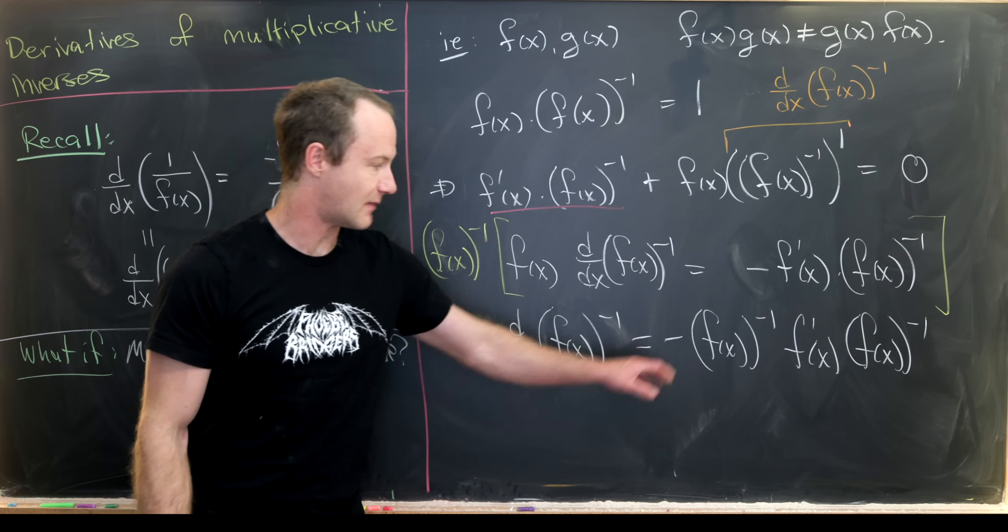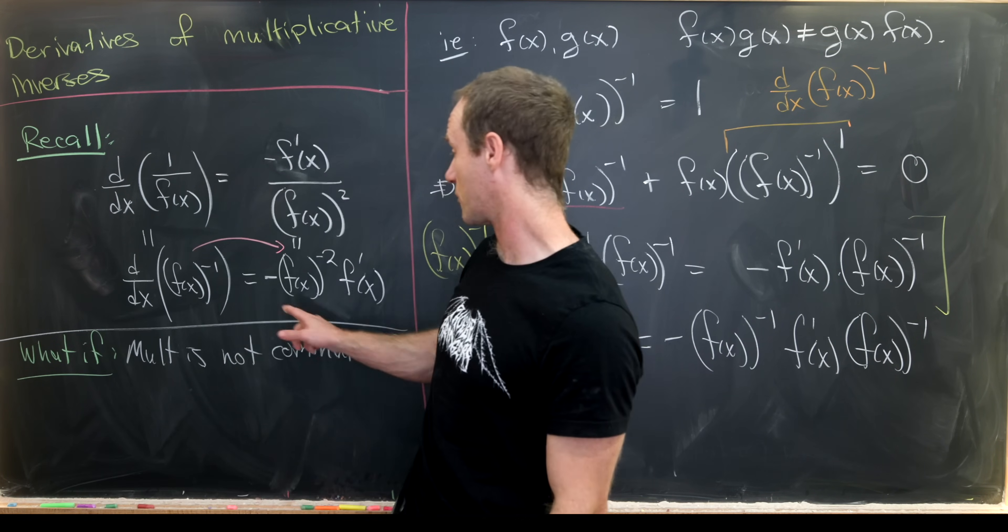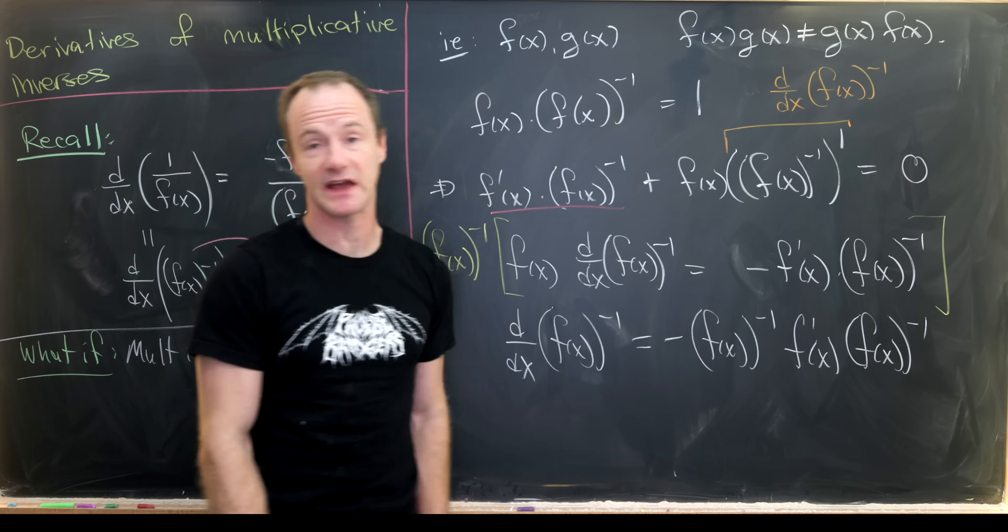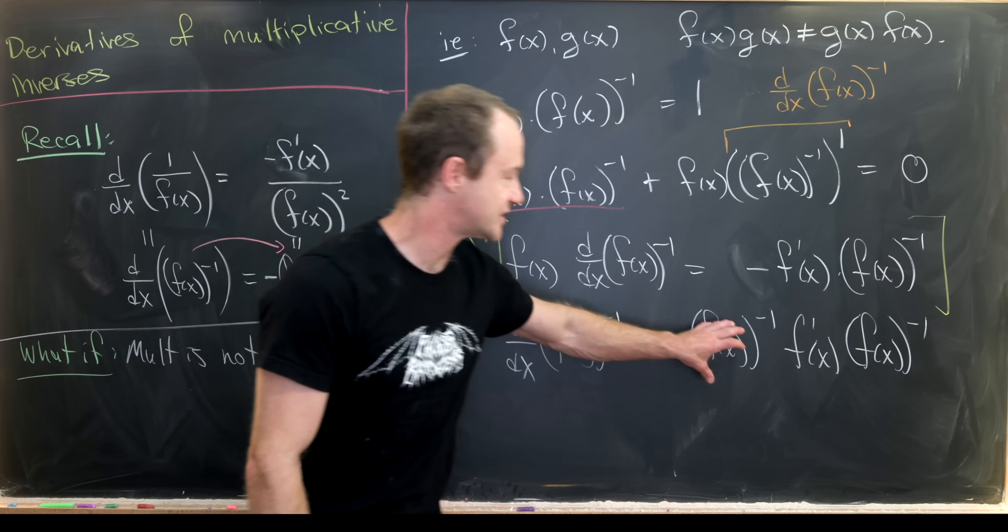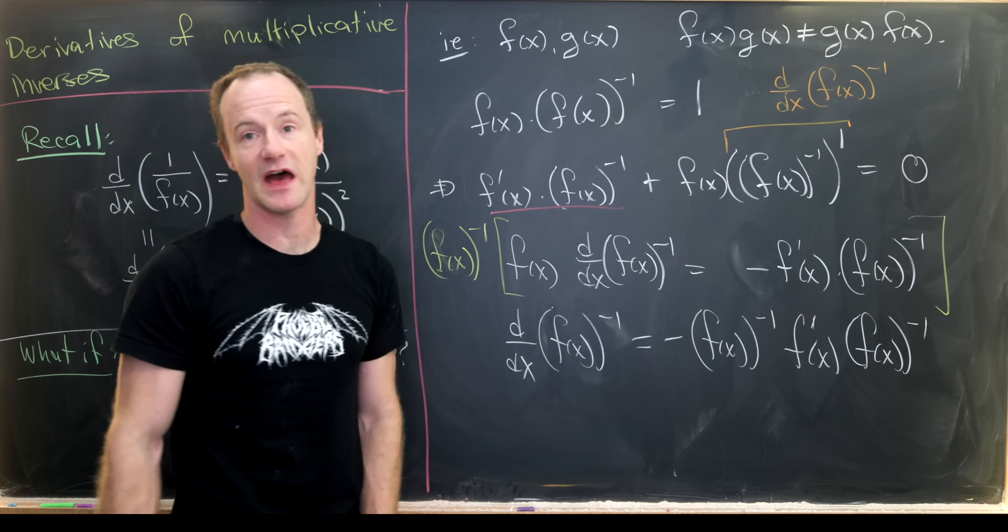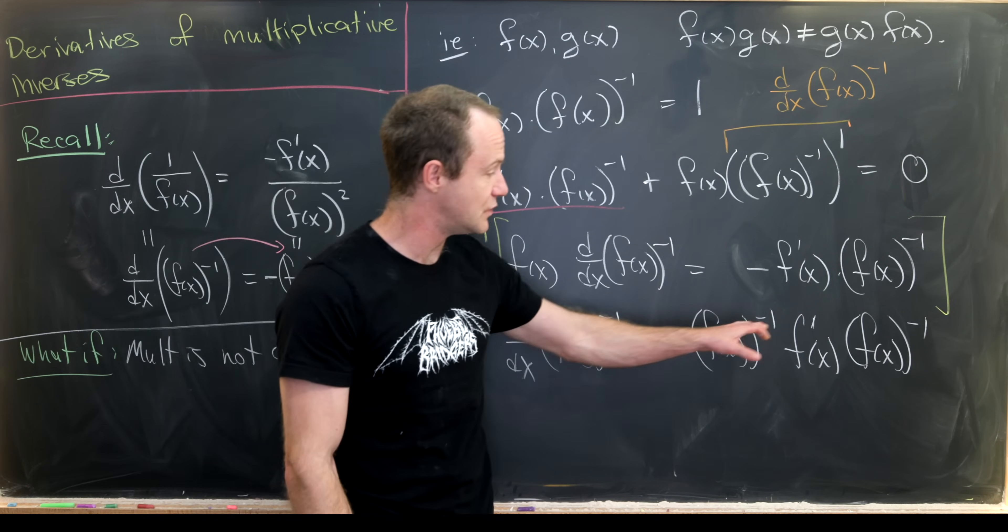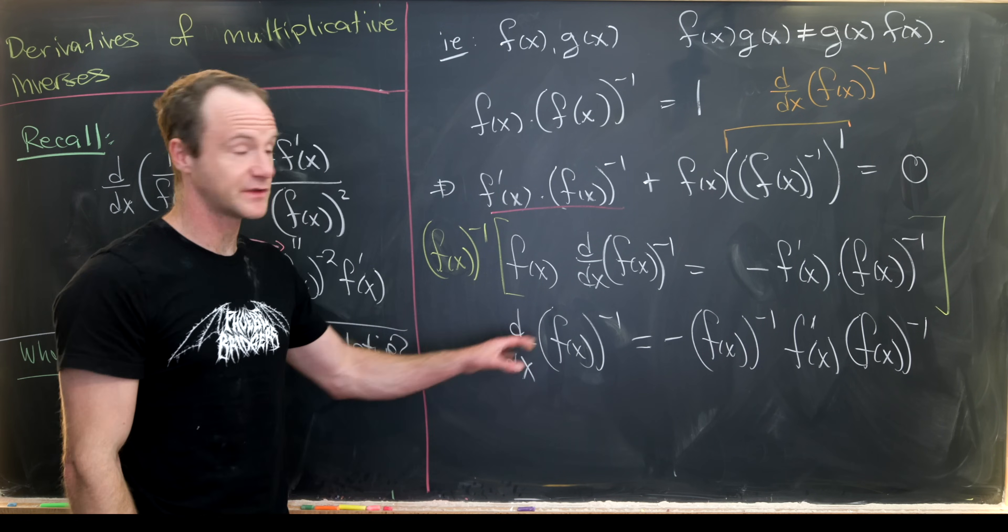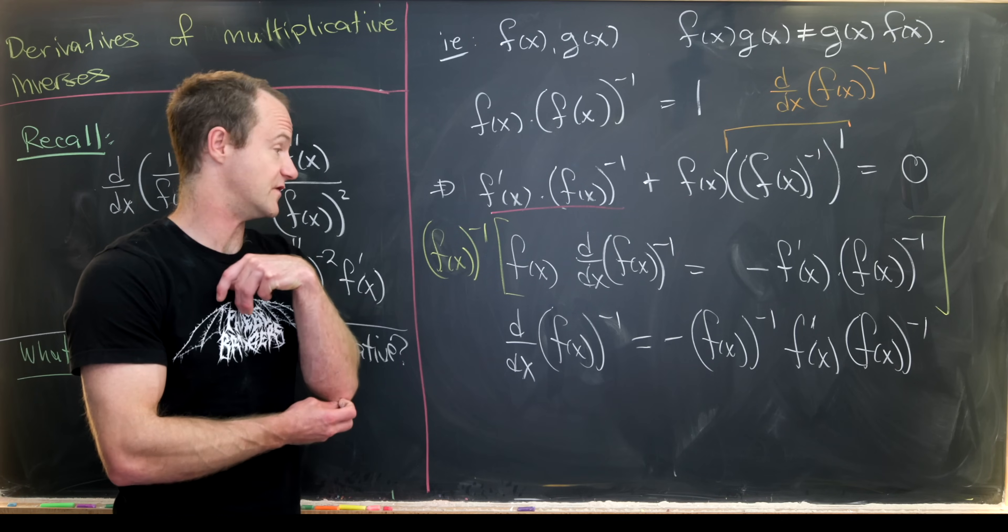Notice we've got this minus sign just as we had over here, and we've got two copies of this f(x) to the minus 1 power. It's just in this case they are hugging this derivative of f(x), and we can't commute them past f' because we do not have commutativity of multiplication. This would be our final version of this formula.